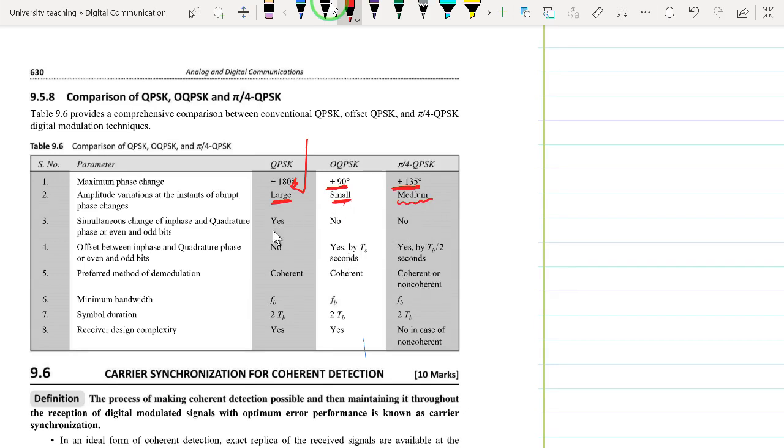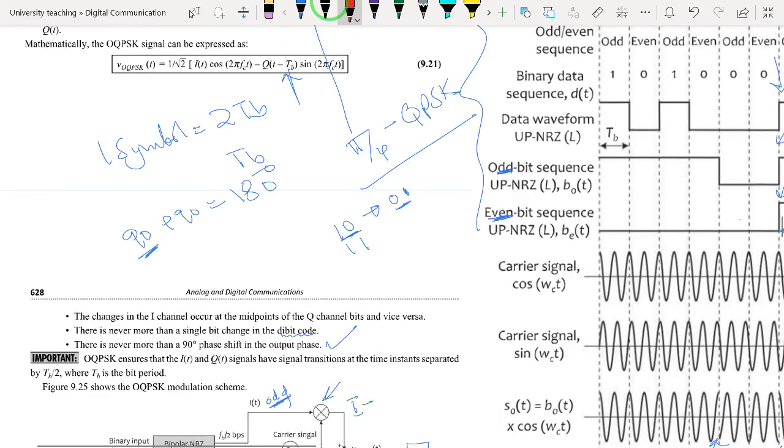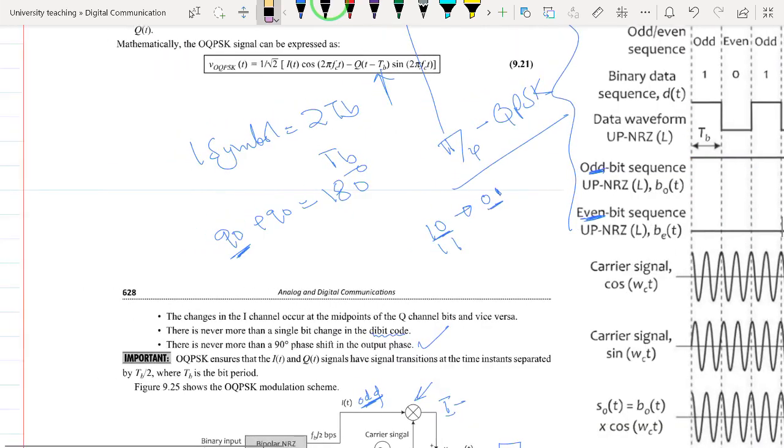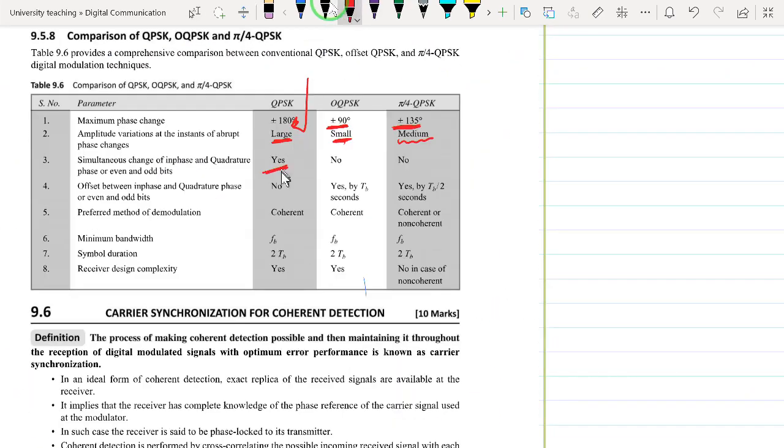The amplitude variations of the carrier phase are large for QPSK, very small for OQPSK, and moderate or medium for π/4 QPSK. Can we have a simultaneous change of in-phase and quadrature phase at the same time? Yes, we see that can happen for QPSK. This causes a very big change in phase shift. But for OQPSK, the two bitstreams or in-phase and quadrature components cannot change at the same time.